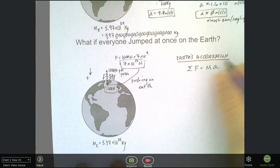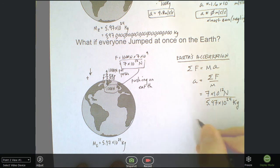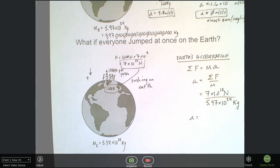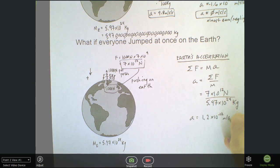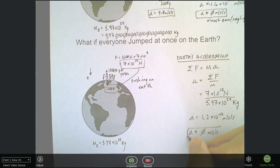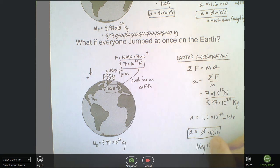So the acceleration of the earth would be the net force divided by the mass. The net force is 7 times 10 to the 12 newtons, approximately, divided by 5.97 times 10 to the 24 kilograms. So we look to our calculator, and we punch in 7 times 10 to the 12 divided by 5.97 times 10 to the 24. And we end up with 1.2 times 10 to the minus 12 meters per second per second. Approximately 0 meters per second. So it would be negligible.